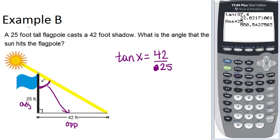Because we're looking for an angle, in this case, we're going to use inverse trig. So we have to do tan inverse of 42 over 25 in order to figure out what X is.